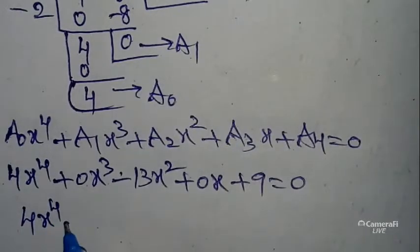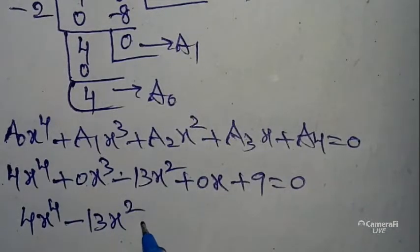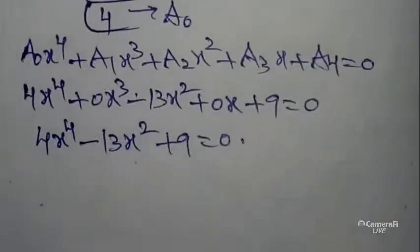So this can be written as 4x⁴ - 13x² + 9 = 0 is our required answer. I hope you understand, my dear students.